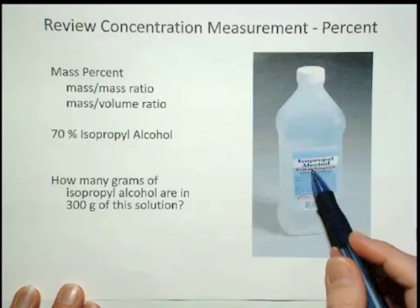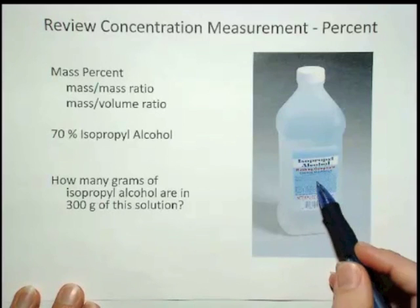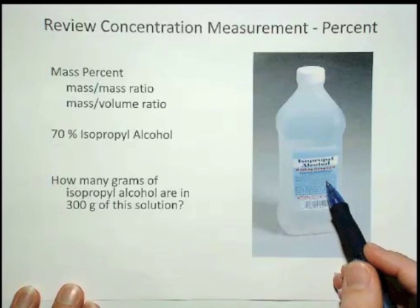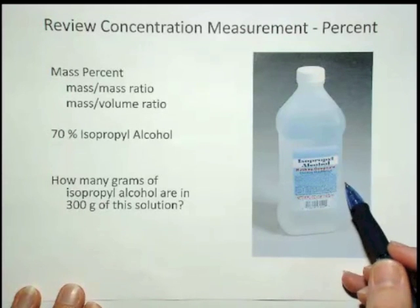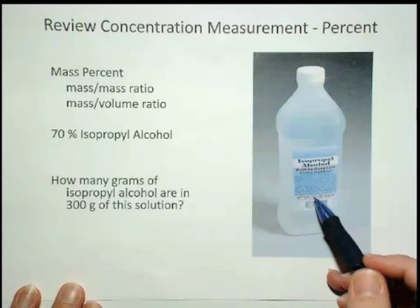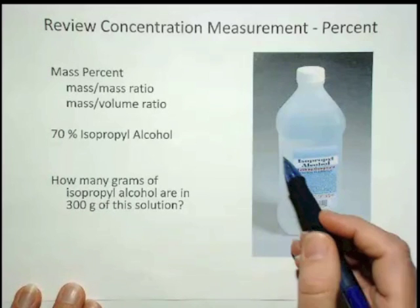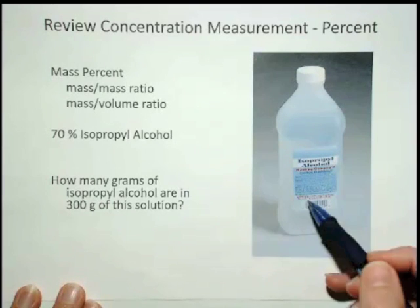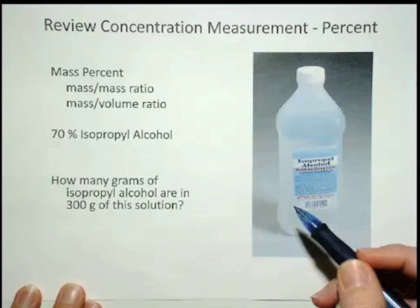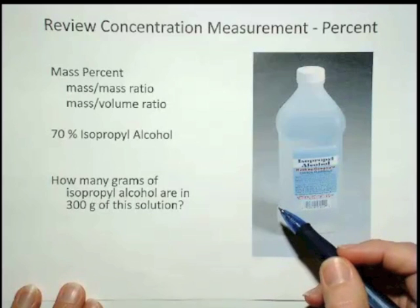You can buy different isopropyl alcohol — sometimes it's called rubbing alcohol. You can get 70%, 75%, or 90% at the drugstore. This particular one is, let's say, 70% isopropyl alcohol.